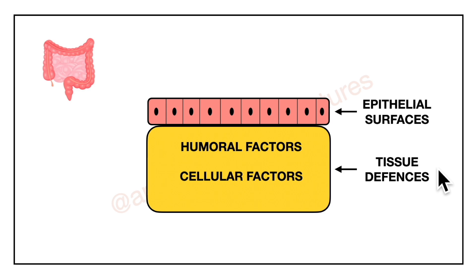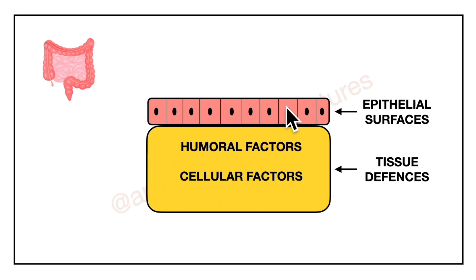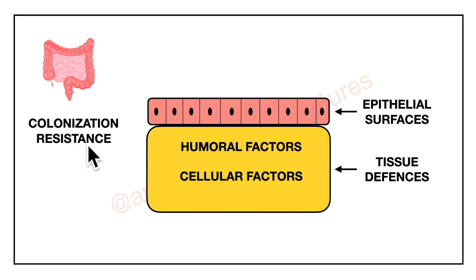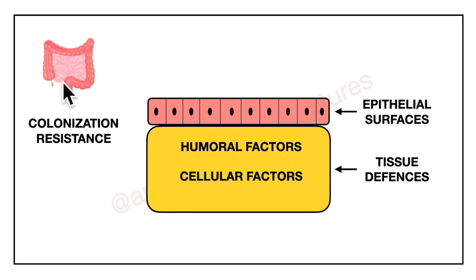Now let us learn about the mechanism of innate immunity, which involves epithelial surfaces and tissue defenses. Our intact skin and mucous membranes covering the body provide protection against bacteria through a mechanical barrier and bactericidal secretions. There is also colonization resistance — the resistance offered by the predominant normal flora to infection. For example, intestinal anaerobic microflora prevents super-infection by coliforms during antibiotic therapy.